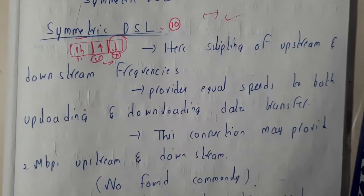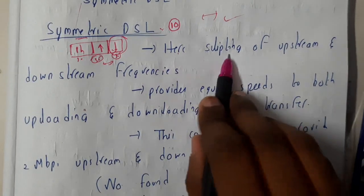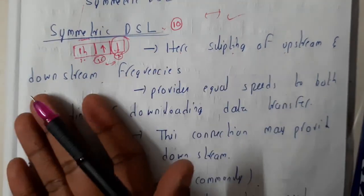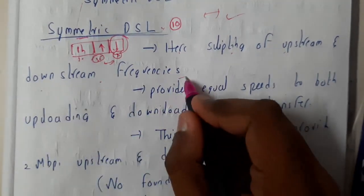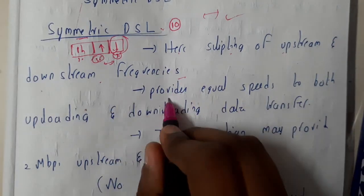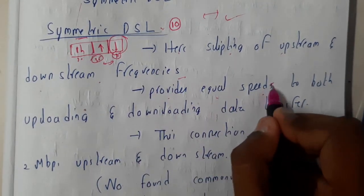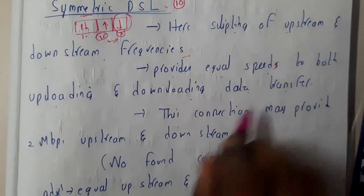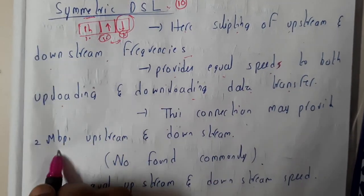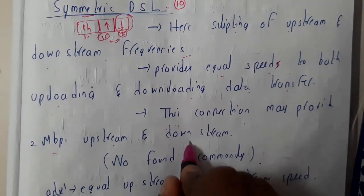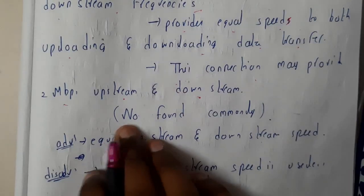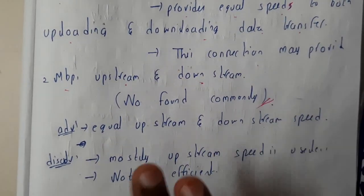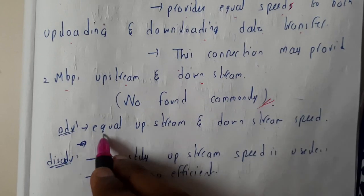The splitting of upstream and downstream — that is upload speed and download speed — frequencies will be done equally. This provides equal speed to both uploading and downloading data transfer. For example, the connection may provide 2 Mbps upstream and 2 Mbps downstream. This is not found commonly and most of us will not be using this method.